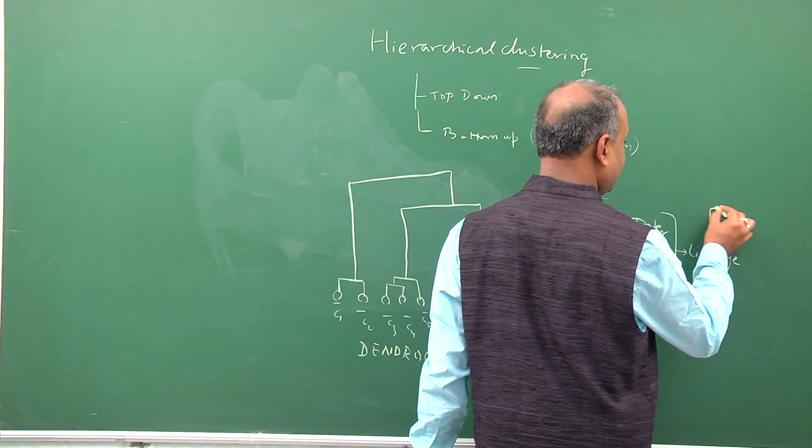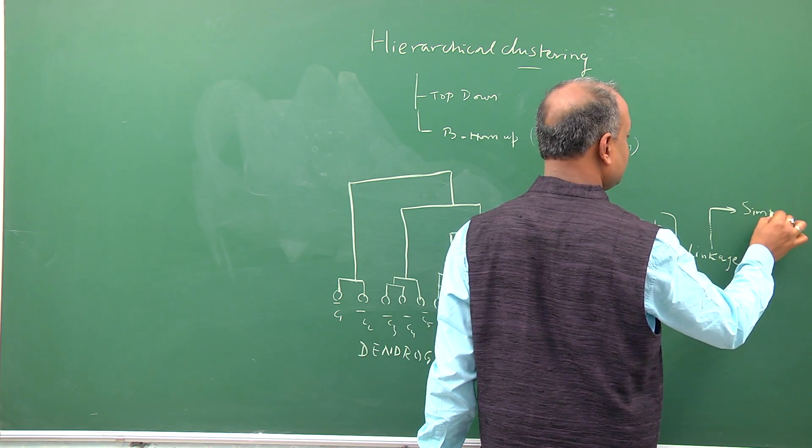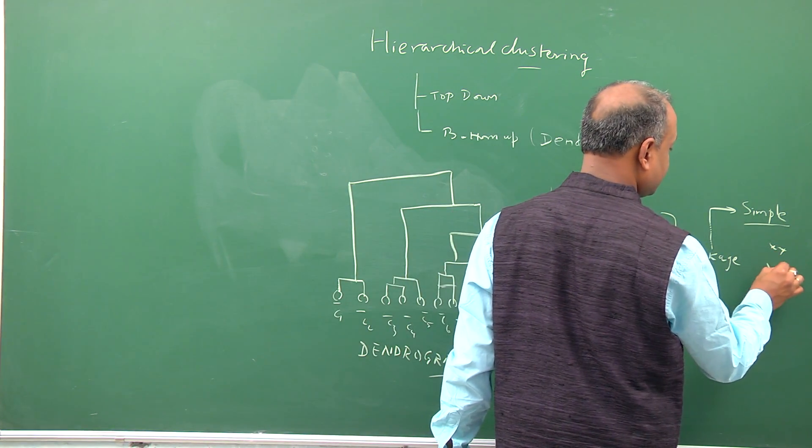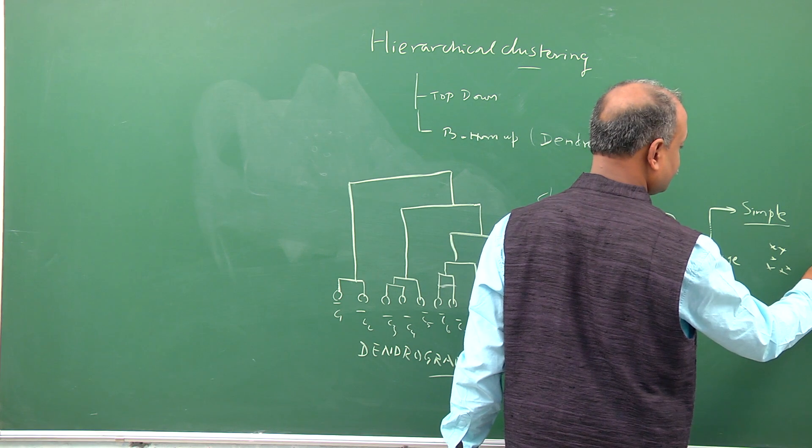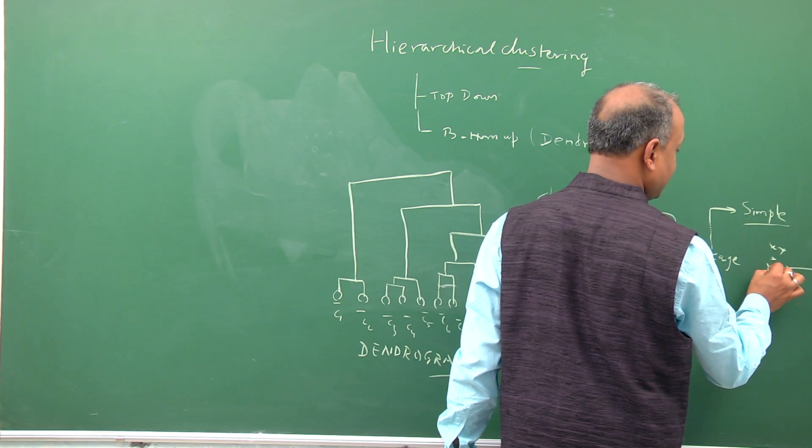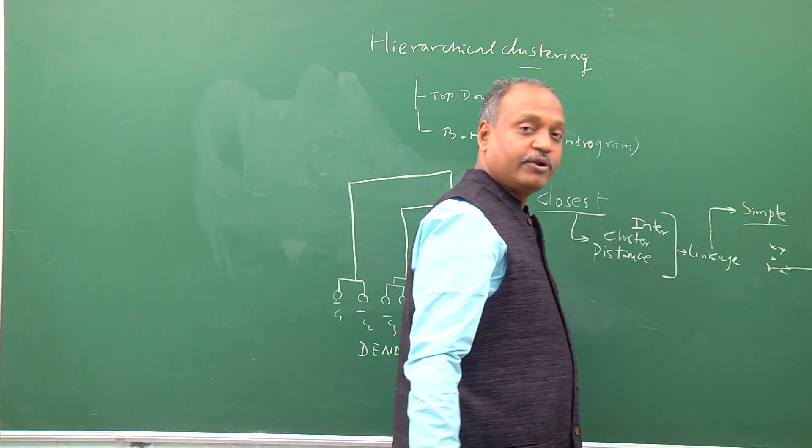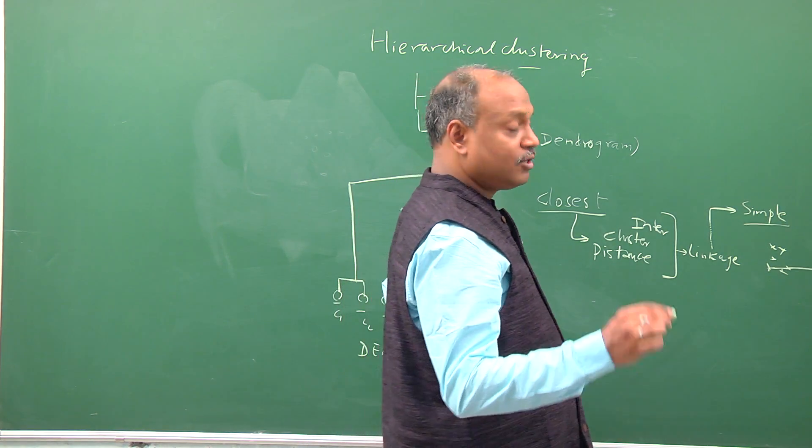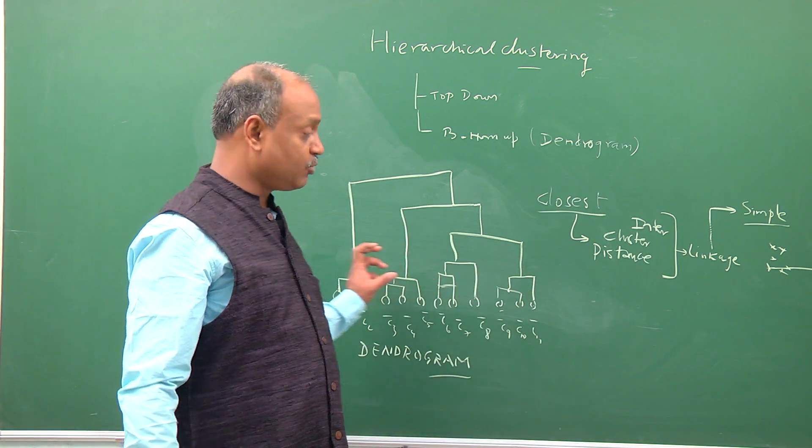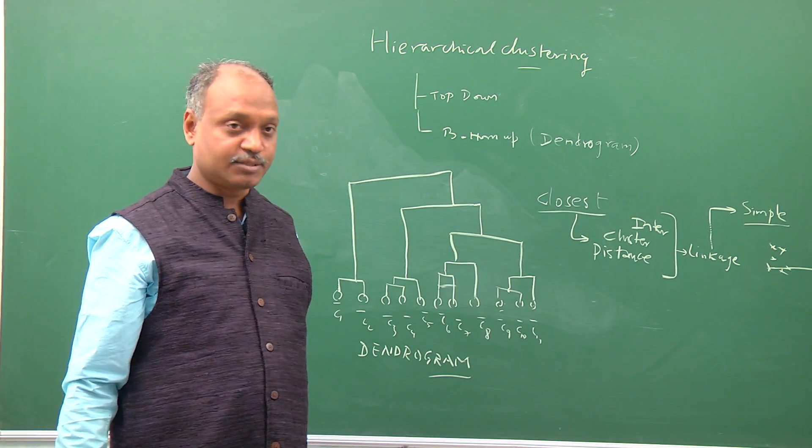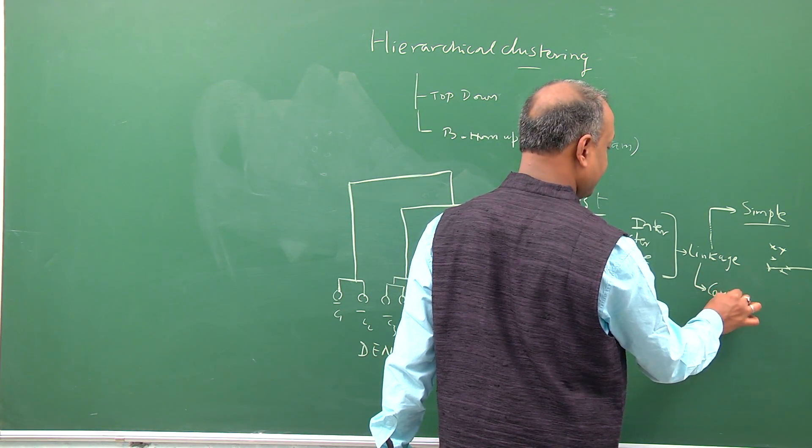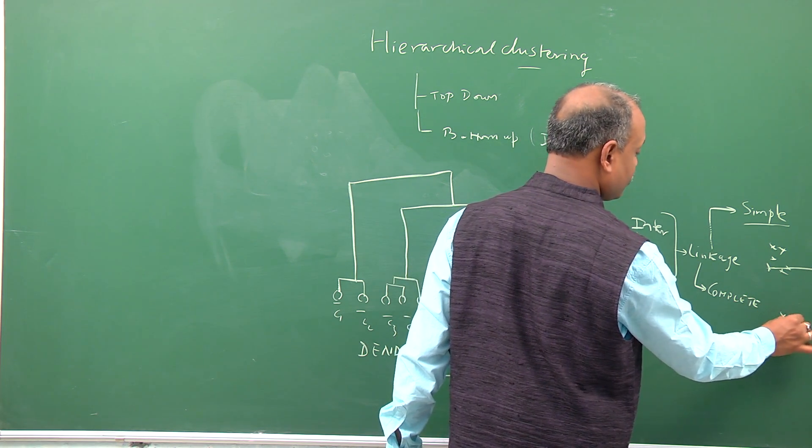One you can say is simple, where you say that you want to take one cluster and find out the distance between the farthest elements or the farthest distance possible between two elements in the two clusters. That forms a simple linkage. What simple linkage based inter-cluster distance measure tries to give is it gives clusters which form long chains because you are talking about long distances. On the other hand, linkage can also be known as complete linkage. Complete linkage is basically where we are talking about instead of farthest distance, you look at the closest distance.